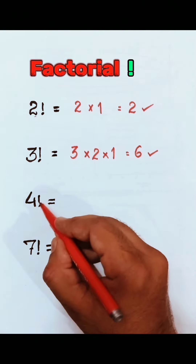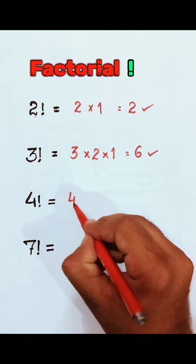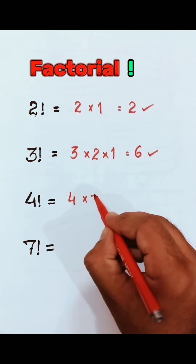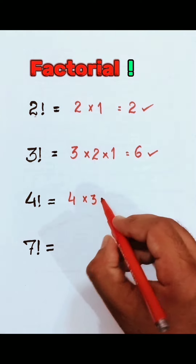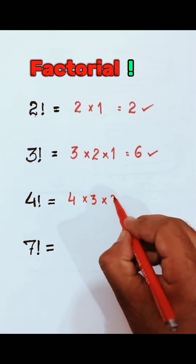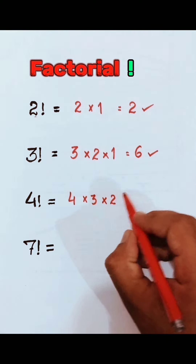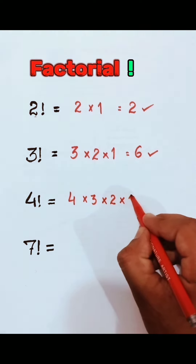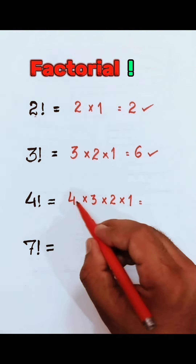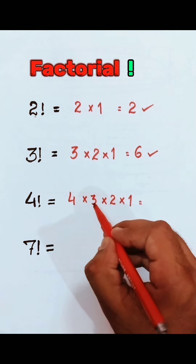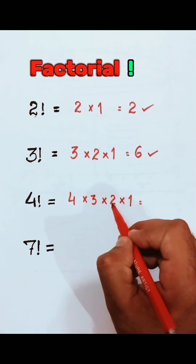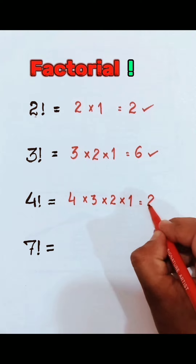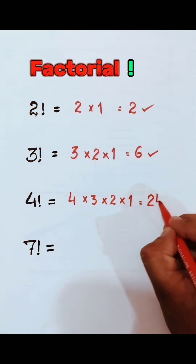4 factorial means 4 times 3 times 2 times 1. That equals 4 times 3, which is 12. 12 times 2 is 24. 24 times 1 equals 24.